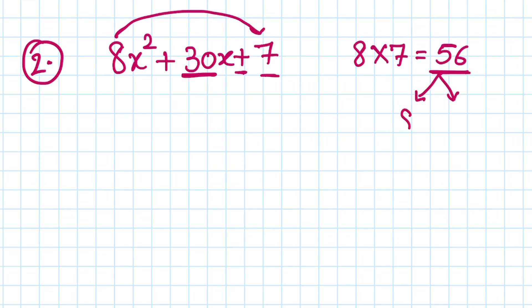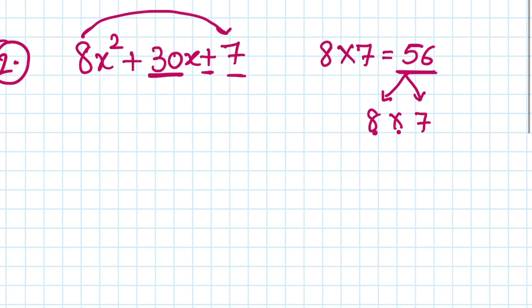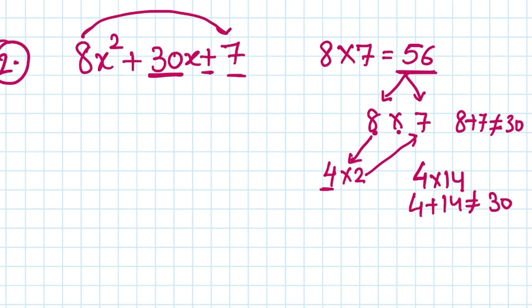We know that 8 times 7 is 56, but 8 plus 7 is not 30, so that doesn't work. What we do next is factorize one of the numbers—we can't do the other one because it's prime. We can do 4 times 14, which is also 56, but 4 plus 14 doesn't give us 30, so that doesn't work either.